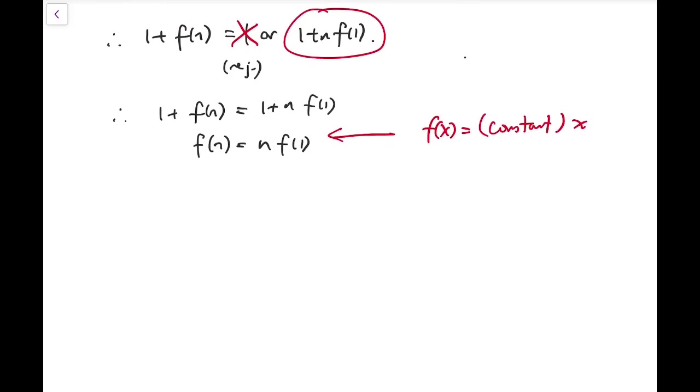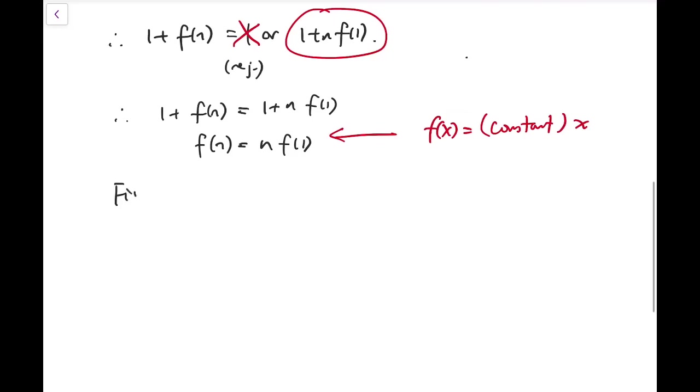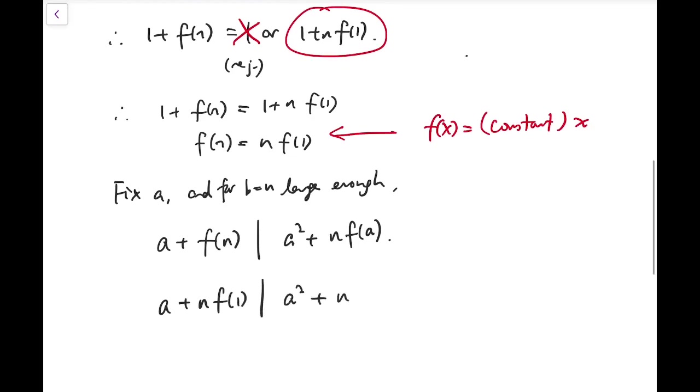But now we have to show that this equation actually holds for all n, not just some n that is large enough. Now I'm going to fix a and put some n that is large enough into b. I can say, let me rewrite this. I can say a plus f of n divides a squared plus n times f of a. And the left-hand side is actually equal to, can also be written as a plus n times f of 1 divides a squared plus n times f of a.